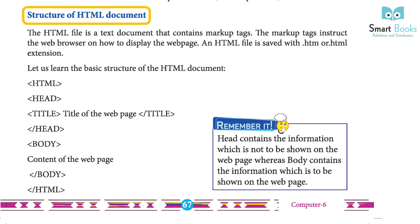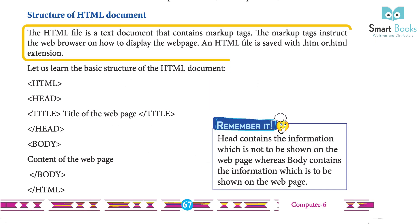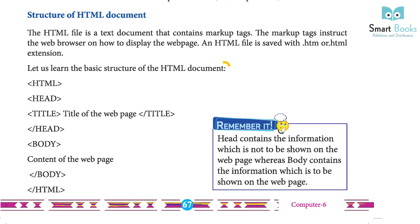Structure of HTML document: The HTML file is a text document that contains markup tags. The markup tags instruct the web browser on how to display the web page. An HTML file is saved with .htm or .html extensions. Let us learn the basic structure of an HTML document.